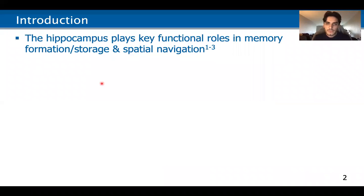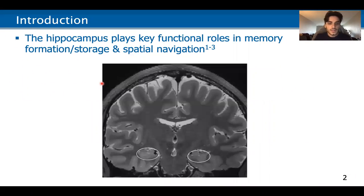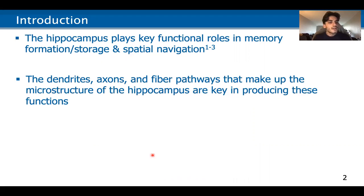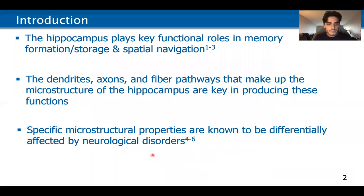The hippocampus plays key functional roles in memory formation and storage, episodic recollection, and spatial navigation. Here I'm showing you an MRI where the white circles denote the location of the hippocampus, which is in the medial temporal lobe. The dendrites, axons, and fiber pathways that collectively make up the microstructure of the hippocampus are key in producing these functions, and specific microstructural properties are known to be differentially affected by neurological disorders.